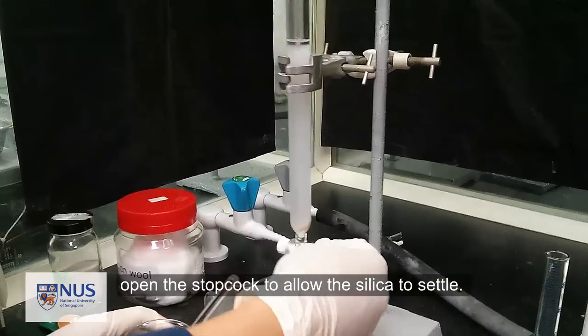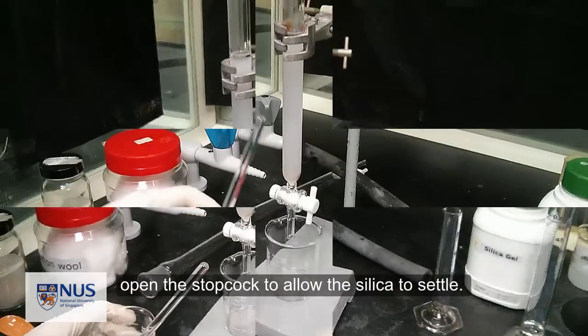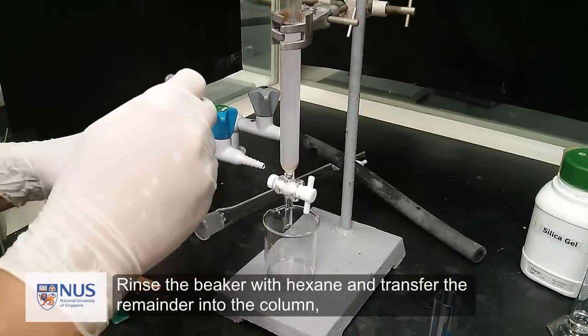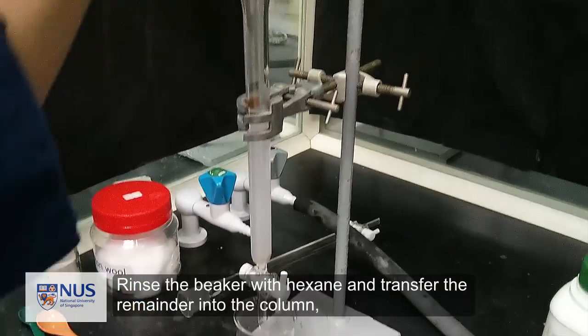Open the stopcock to allow the silica to settle. Rinse the beaker with hexane and transfer the remainder into the column.